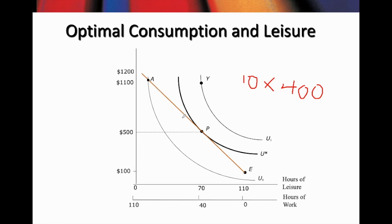What about point A? Point A is attainable because it lies on the budget constraint. However, the problem with point A is that it is on a lower indifference curve U0. At point A, the level of consumption is around $1,100, but this worker would have very few hours for leisure — most of the time is spent working — and that would give this worker less utility and less satisfaction. So point A is not optimal for this worker.